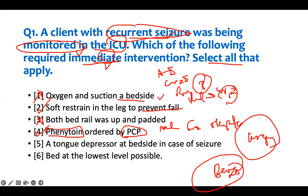'A tongue depressor at bedside in case of seizure.' No — nothing goes in the mouth, absolutely never. Anything you put in their mouth during a seizure causes aspiration. So we need to intervene and take away the tongue depressor.